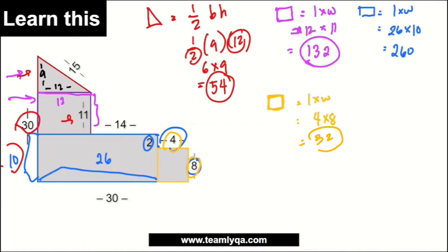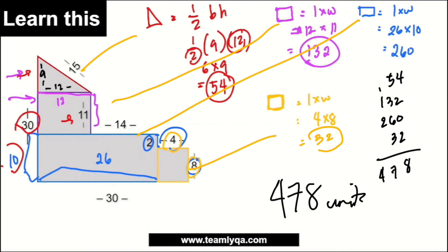So, now that we have that, ito na, meron na tayo ng triangle, meron na tayo ng itong shape na yan, meron na tayo nito, and then here, kompleto na natin lahat ng mga area nila. So, all we have to do now is to add all of them. So, ipagsasama-sama lang natin, we have the 54, 132, tapos 260, and then yung huling 32. Tapos, all you need to do is to add those. This will be 8. Tapos, ito, 11, 14, 17, tapos, 4. So, the answer would be 478 units squared.